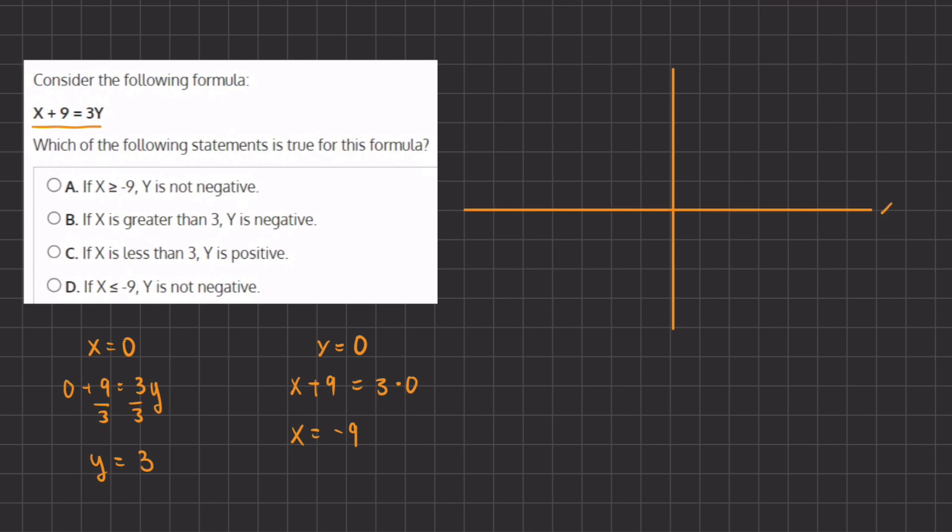So we're going to label our x-axis and our y-axis, and now we're going to plot. Our first point is when x equals 0 and y equals 3, so that's going to be right around here. And our second point is when y equals 0 and x equals negative 9, which is around here. So now let's connect our two points to see our linear function.